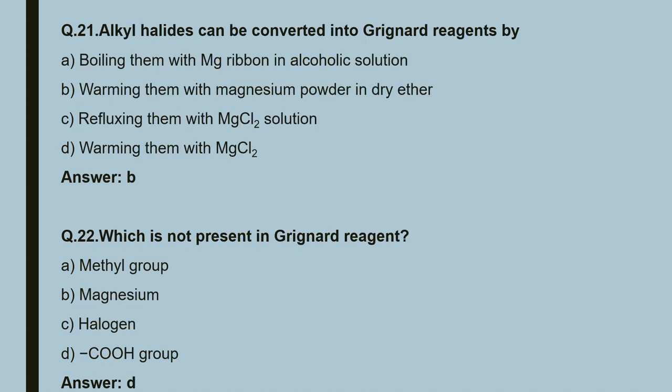Question 21: alkyl halides can be converted into Grignard reagents by — A. boiling with magnesium ribbon in alcoholic solution; B. warming with magnesium powder in dry ether; C. refluxing with MgCl₂ solution; D. warming with MgCl₂. We can convert alkyl halides to Grignard reagents by warming with magnesium powder in dry ether. Correct answer is B.